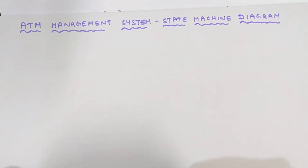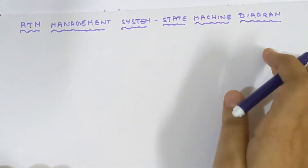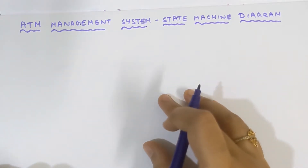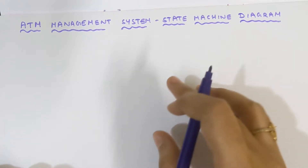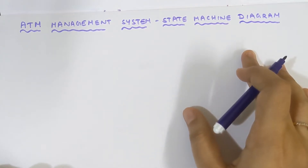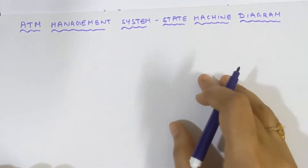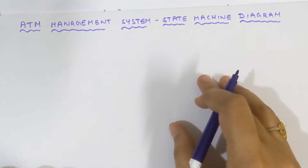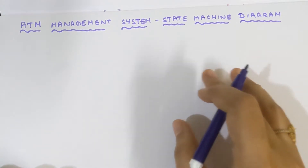In this video, we are going to learn how to draw the state machine diagram for the ATM management system. Before watching this video, please watch the video in which I explained the various symbols required for drawing the state machine diagram — I've attached the link in the description box. I also made a video on the state machine diagram of an online shopping system; that link is also in the description box. Now let's get into this video.